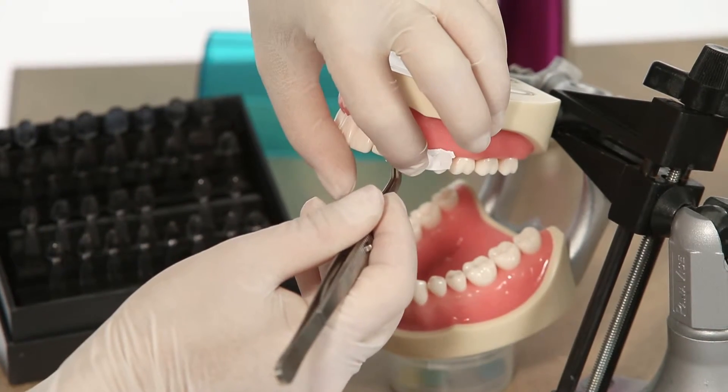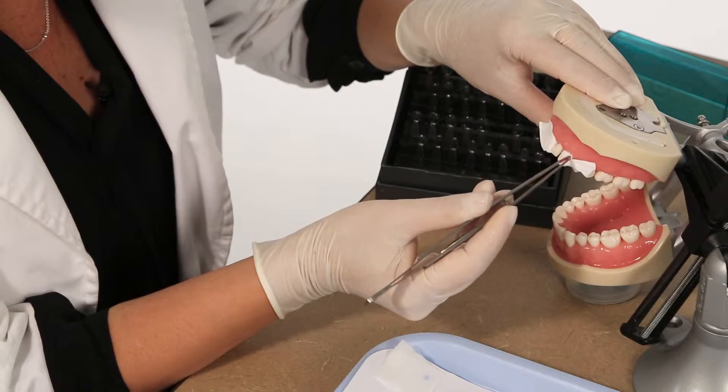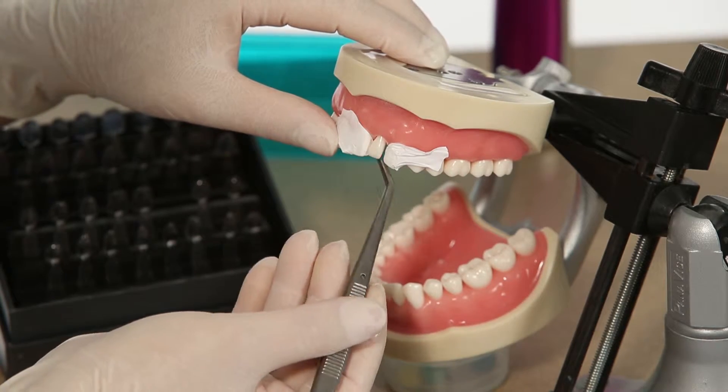Place an interproximal separator such as Mylar strips, Toffelmeyer, or Teflon tape to isolate the tooth for the procedure.